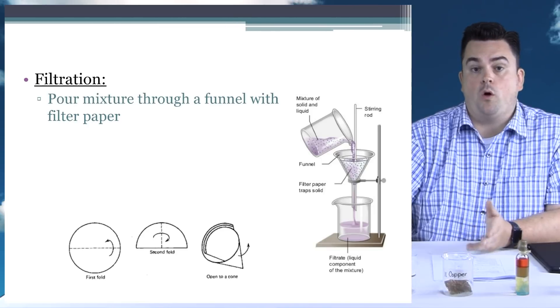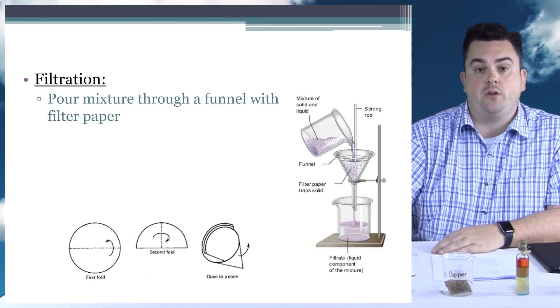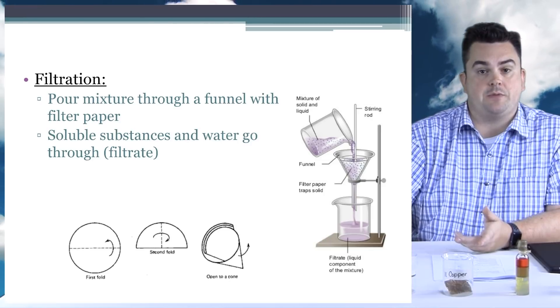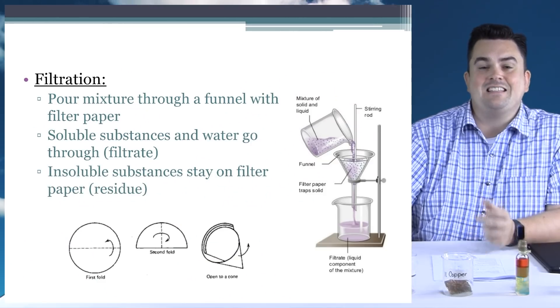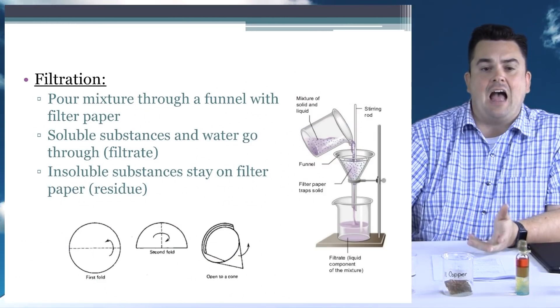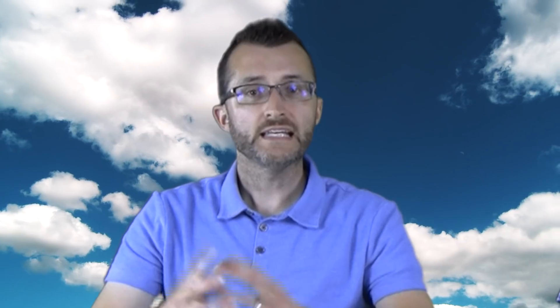Filtration: pour the mixture through a funnel with filter paper. Soluble substances and water go through — this is called the filtrate. Soluble substances are the substances that dissolve in water. Some students think that just the water will go through the filter paper, but anything dissolved — these soluble substances — will also go through the filter. Insoluble substances stay on the filter paper; this is called the residue. These particles are too large to pass through the filter.